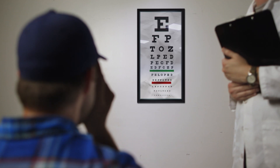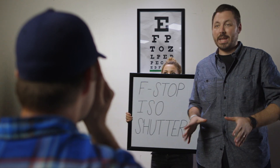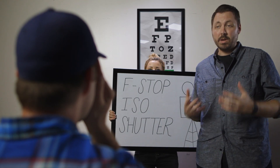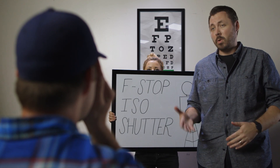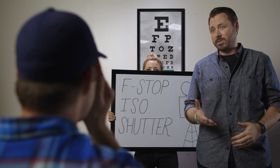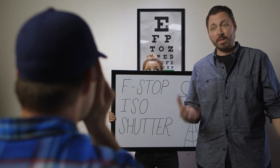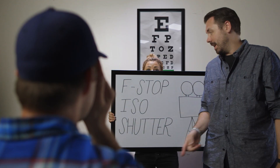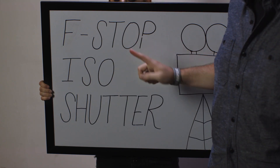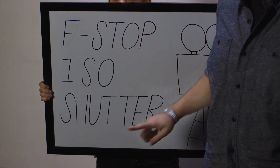Control over your light is going to start with your camera. The way you get your image is by exposing your camera sensor to light. And the way you're going to control that exposure to get the proper levels is from three things: f-stop, ISO, and shutter.